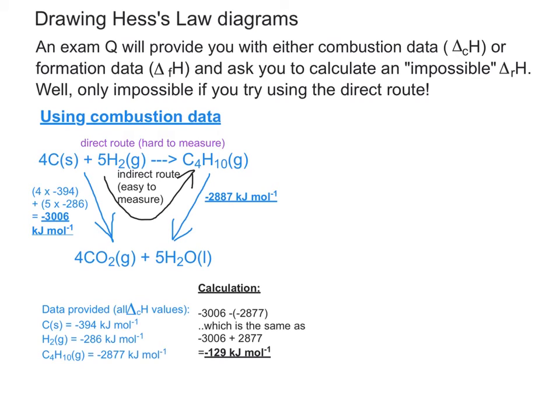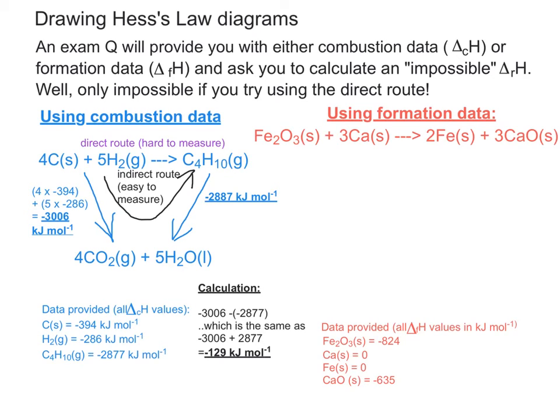Now there's another set of data they could give you. They could give you formation data that requires a slightly different approach. Very similar idea, but the way you draw out your Hess's law diagram is going to be a little bit different. So let's look briefly at the data that we've been given. The formation enthalpy for iron oxide is minus 824. For calcium oxide it's minus 635. But you'll notice that for calcium and for iron as elements it's zero.